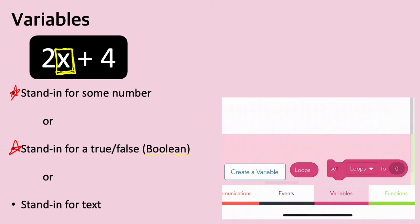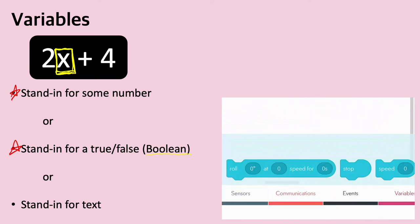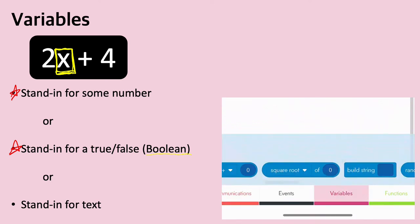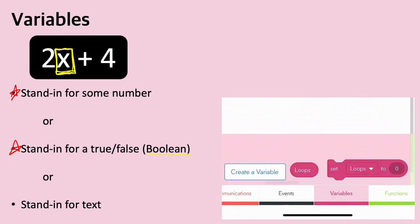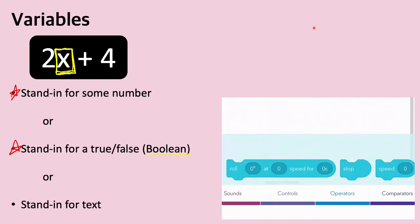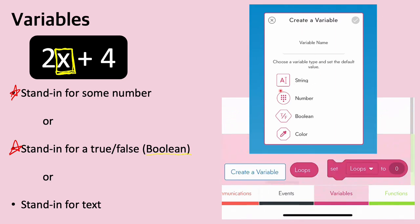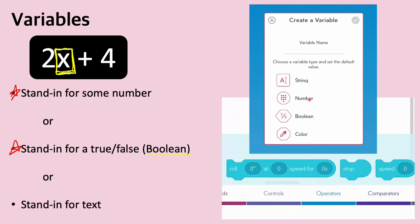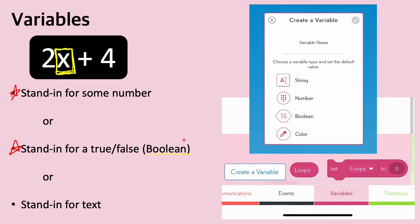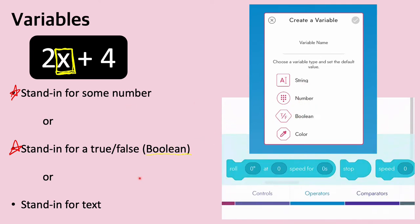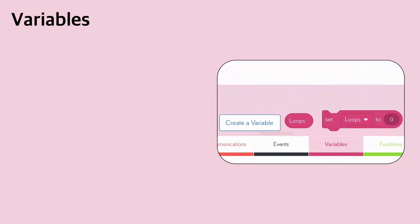The ones we're going to focus on are the number-based ones and the Boolean-based ones. If you want to make a variable in the SpheroEDU app, you go all the way to the right, find where it says variables, and from there you can create a variable. You can give it a name and decide what kind of variable you want — a number, a Boolean, or a string, which is just text. Once you've created a variable, there are a couple of different ways you can use it.